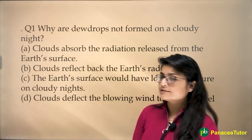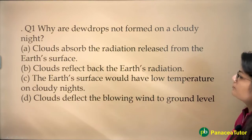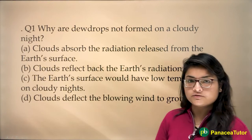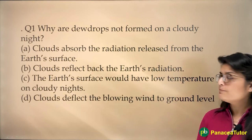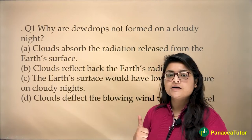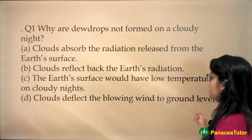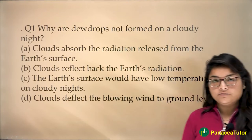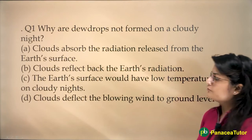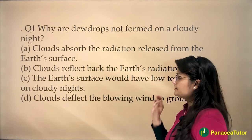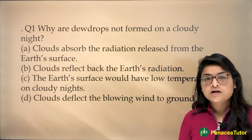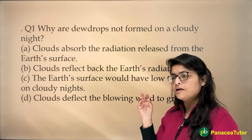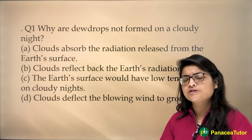Our first question says: why are dew drops not formed on a cloudy night? Option A: clouds absorb the radiation released from the earth's surface. Option B: clouds reflect back the earth's radiation. Option C: the earth's surface would have low temperatures on cloudy nights. Option D: clouds deflect the blowing wind to the ground level. This is a part of climatology — if you have studied dew well, you'll be able to figure it out. Pause the video and try answering.